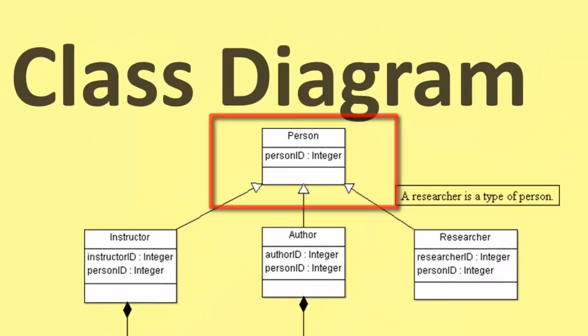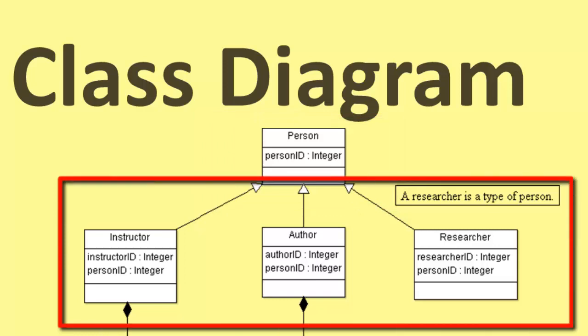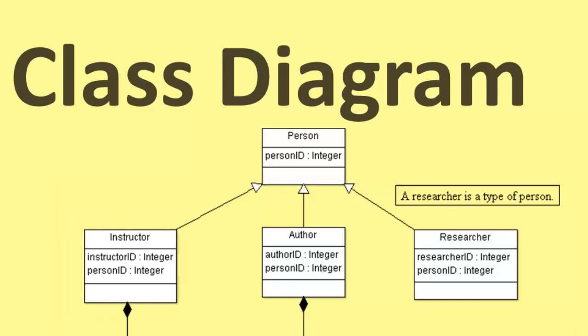At the top we've got a person. Instructors, authors, and researchers are all people. They're a type of person. And so these people are going to need a name. A forename, a surname. They're going to need maybe an account ID. That sort of thing. And that's what we'll go in person. And we'll be inherited by the classes instructor, author, and researcher.